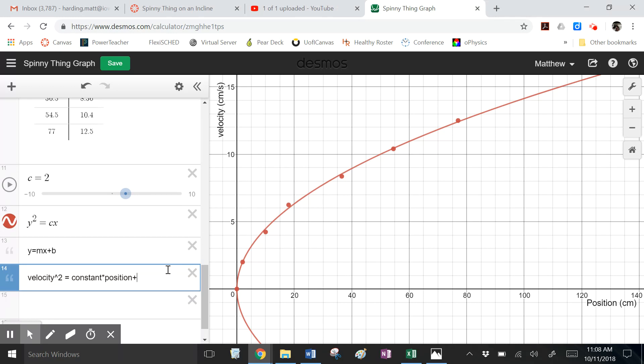Velocity squared equals some constant times, what's my x-axis variable here? It's position. Plus b, what would be represented on this graph? Vertical intercept, that would be if I started off with some velocity. So I'm going to say initial velocity.